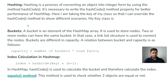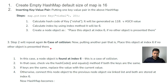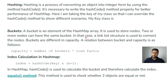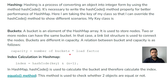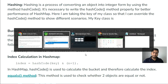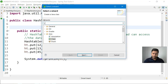A bucket is an element of the HashMap array. It is used to store objects. Two or more nodes can have the same bucket — in that case, a linked list structure is used to connect the nodes. The capacity of the HashMap is calculated as: number of buckets multiplied by the load factor.